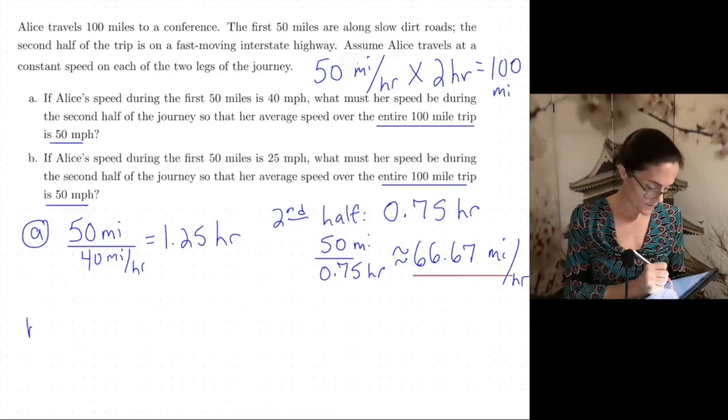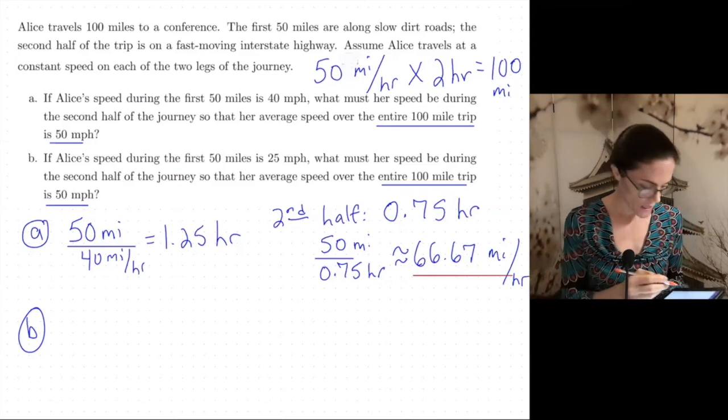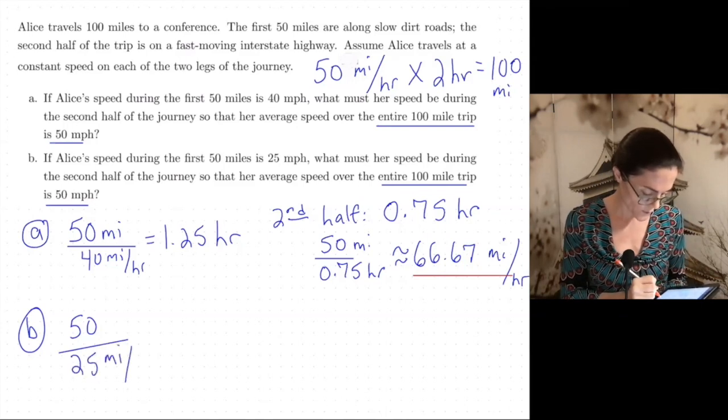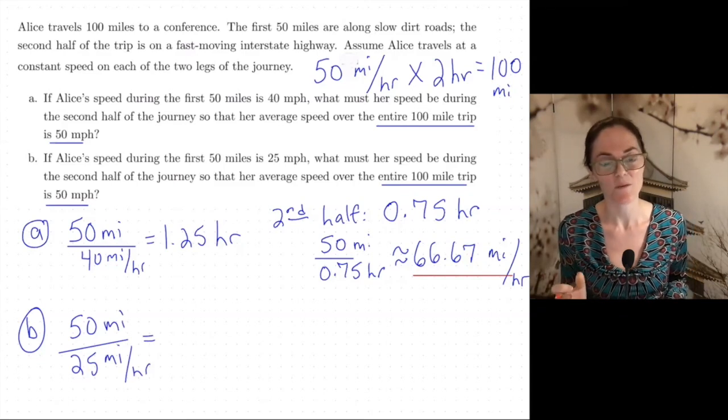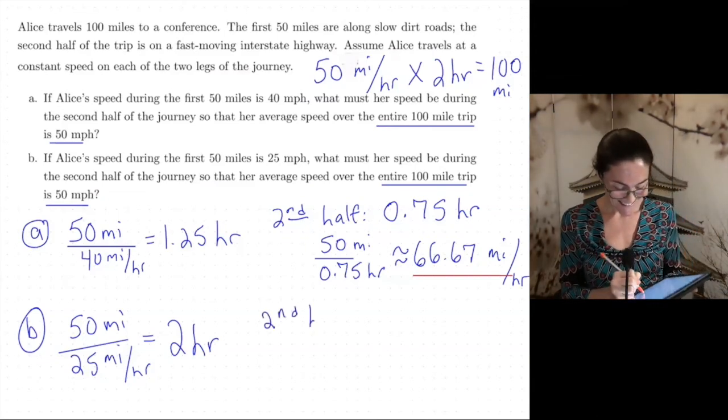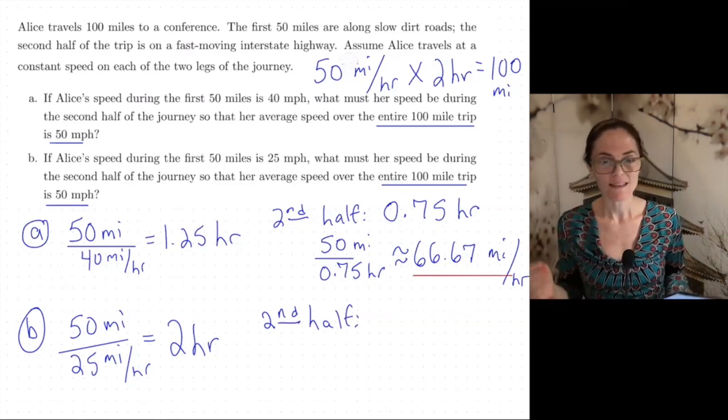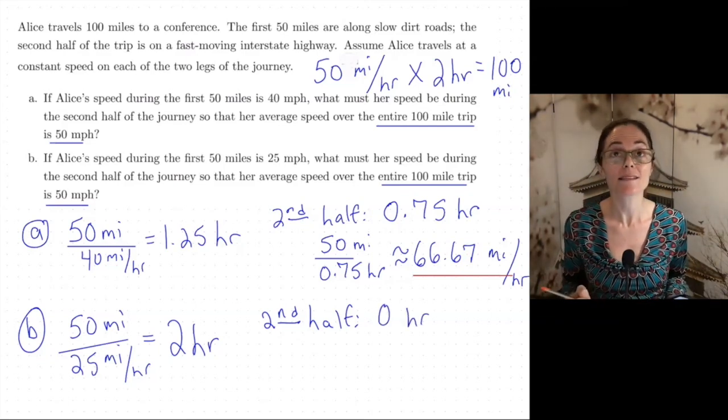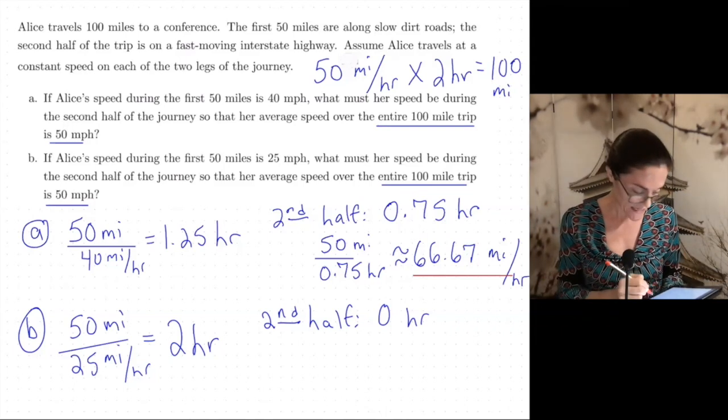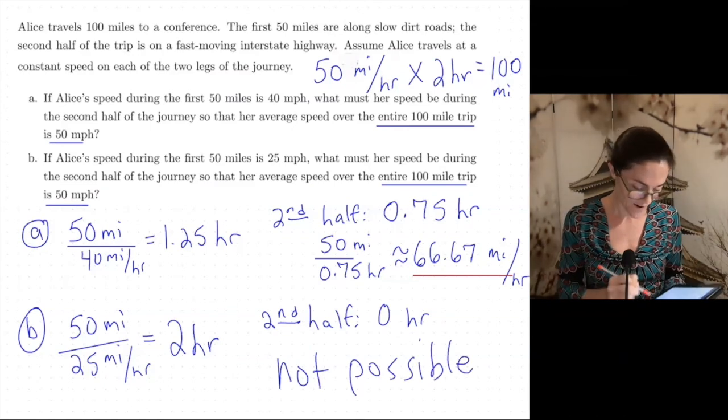Now we move on to part B. It's the exact same idea, except the speed in the first 50 miles is different. So the first 50 miles, her speed is 25 miles per hour. Again, the units here, all together we have hours. So 2 hours. Well, what does that mean about the second half? The second half must be completed in 2 minus 2 hours, which is zero hours. Now, how are you going to drive 50 miles in zero hours? This is not possible. Unless you could just go like this and be there. I don't think we're considering that. So this trip part B is not possible. And this would be our answer for part B.